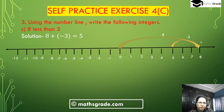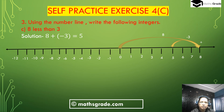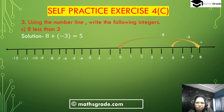Third bit (c): 8 less than 3. 8 is a positive integer, so starting from 0 the number goes to 8. 'Less than' means minus, so from 8 the number goes to the left hand side 3 places: 8 to 7 is 1, 7 to 6 is 2, 6 to 5 is 3. The number is now at 5. So 8 less than 3 will be 8 plus minus 3 equals 5.